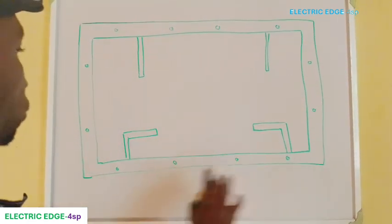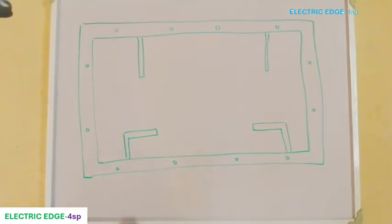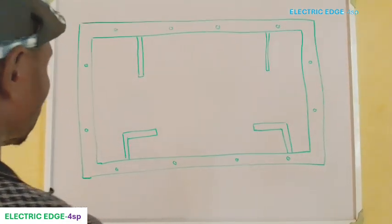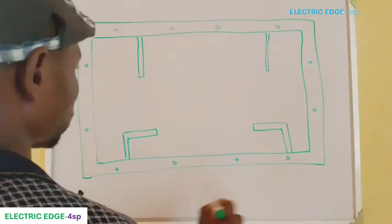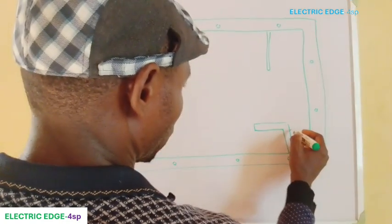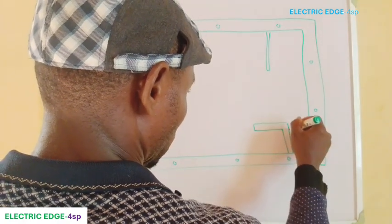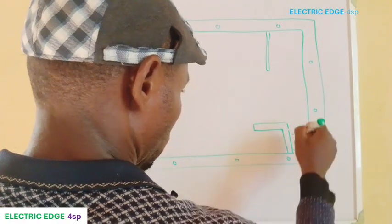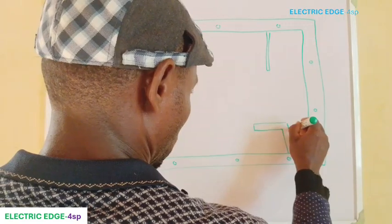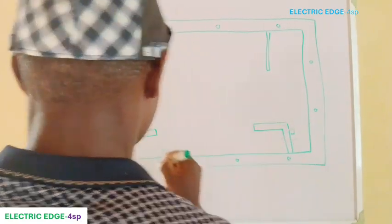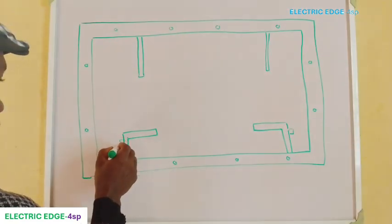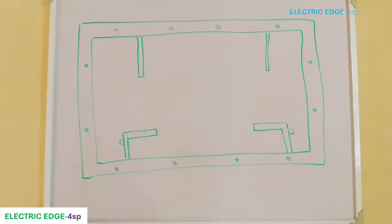So we have to prepare a sketch like this and position the point of light, after which you position your switches. Let's assume we have switch one here. We have the first switch here, we have another switch here.